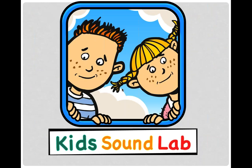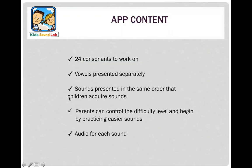Today we're going to talk about two very exciting ranges of apps — evidence-based, well-designed, and effective apps designed especially with young children in mind, though they can be used with a wide range of ages and abilities. We'll start by exploring Kids Sound Lab. There are 24 consonants that the student or client can work on, with vowels presented separately. The sounds are presented in the order of acquisition for most children, which helps guide therapists as well as parents.